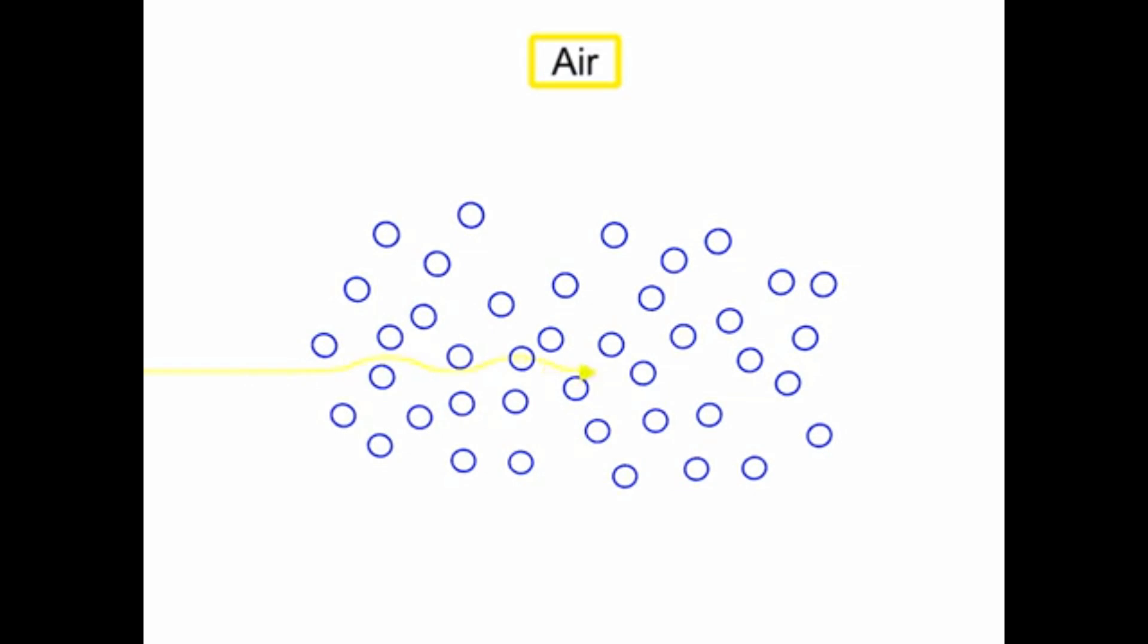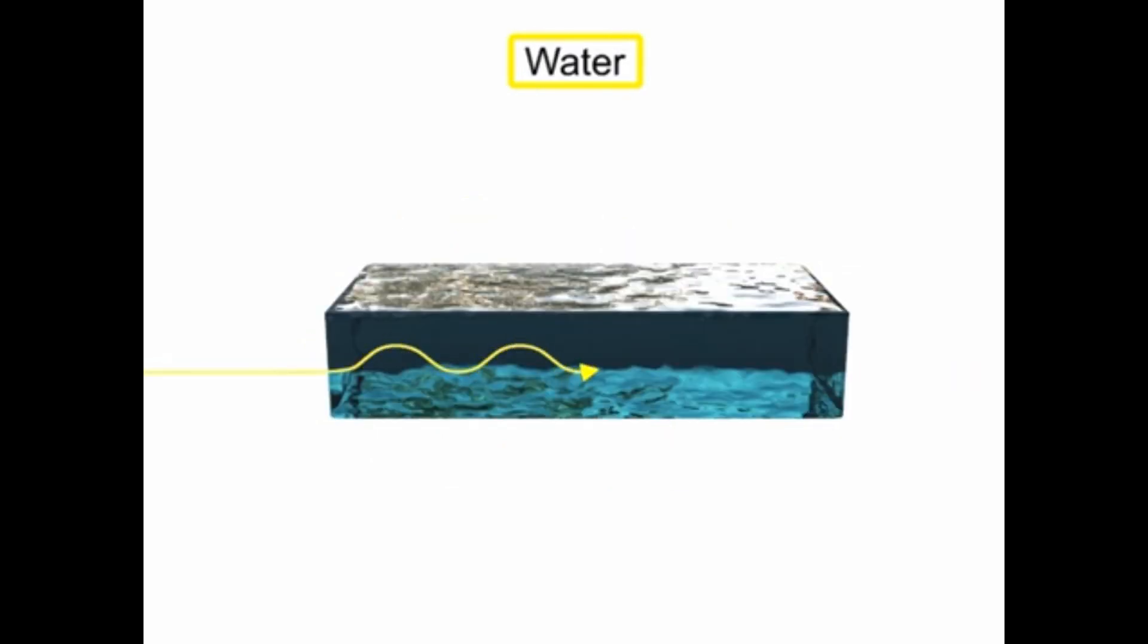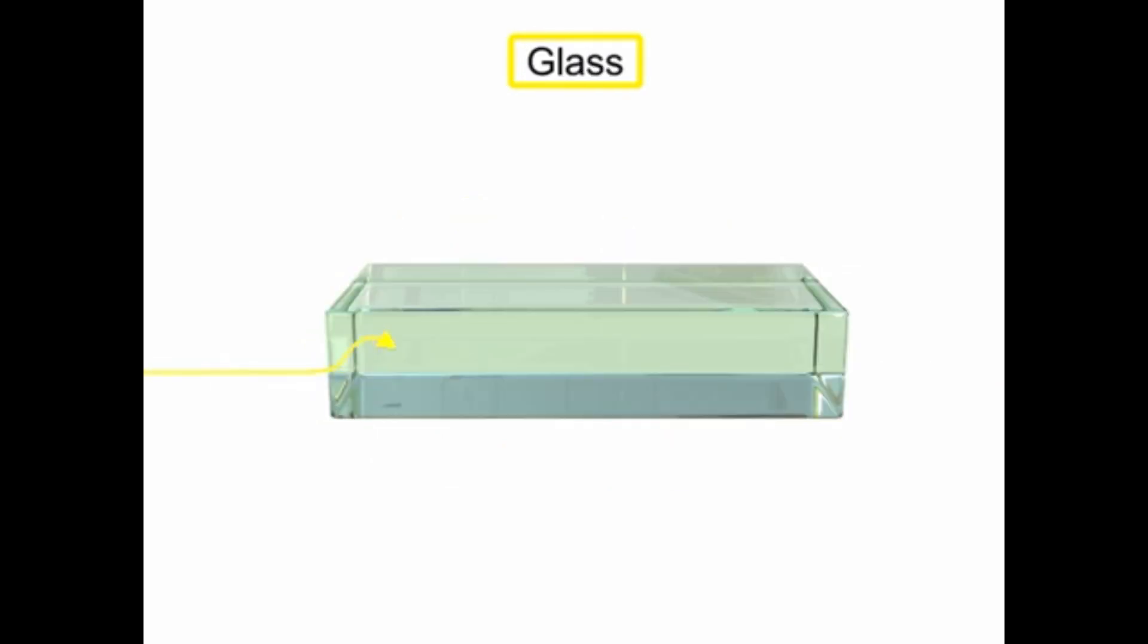When light encounters a medium such as air, water, or glass, it propagates through the substance at a net speed that is less than C.